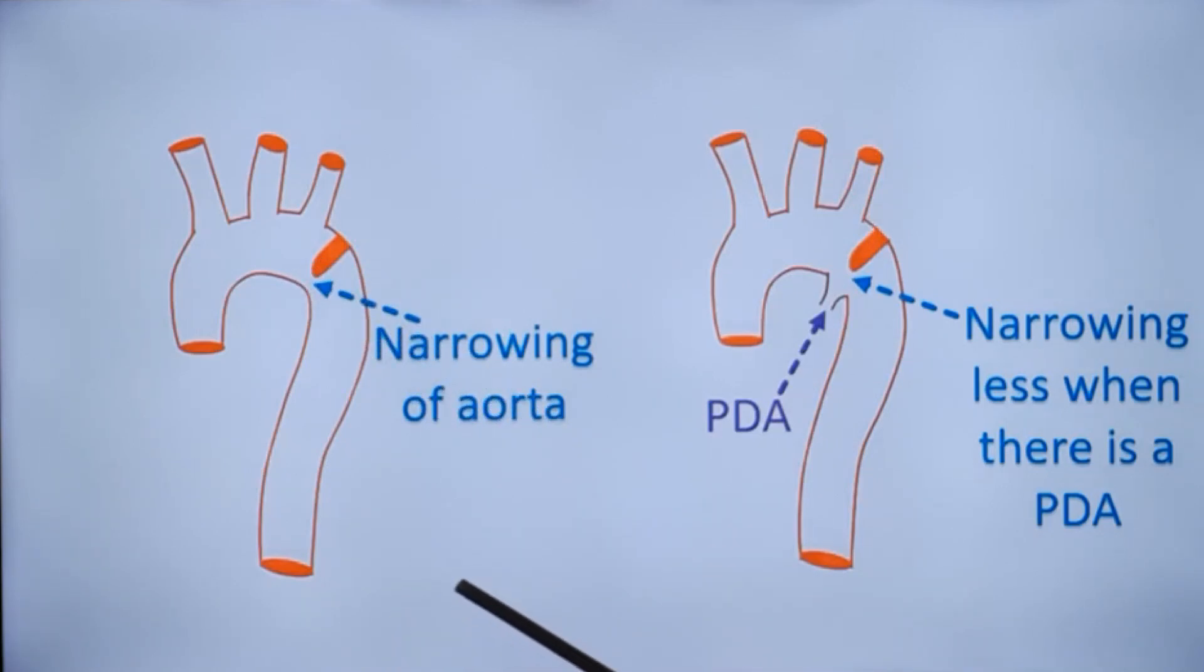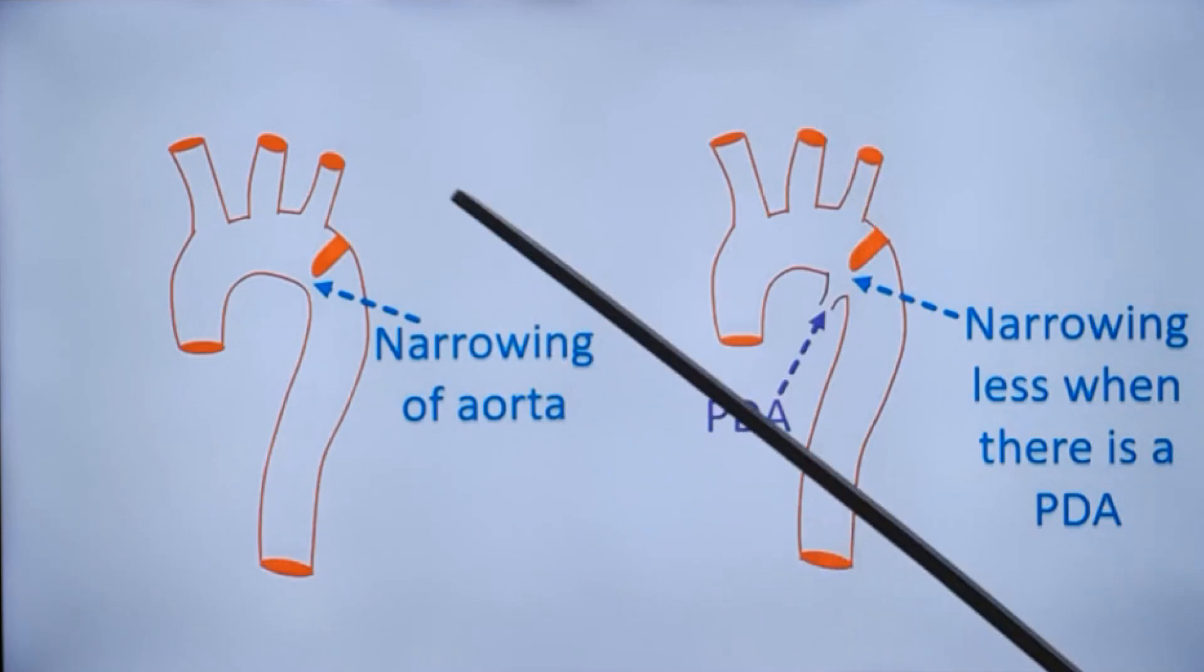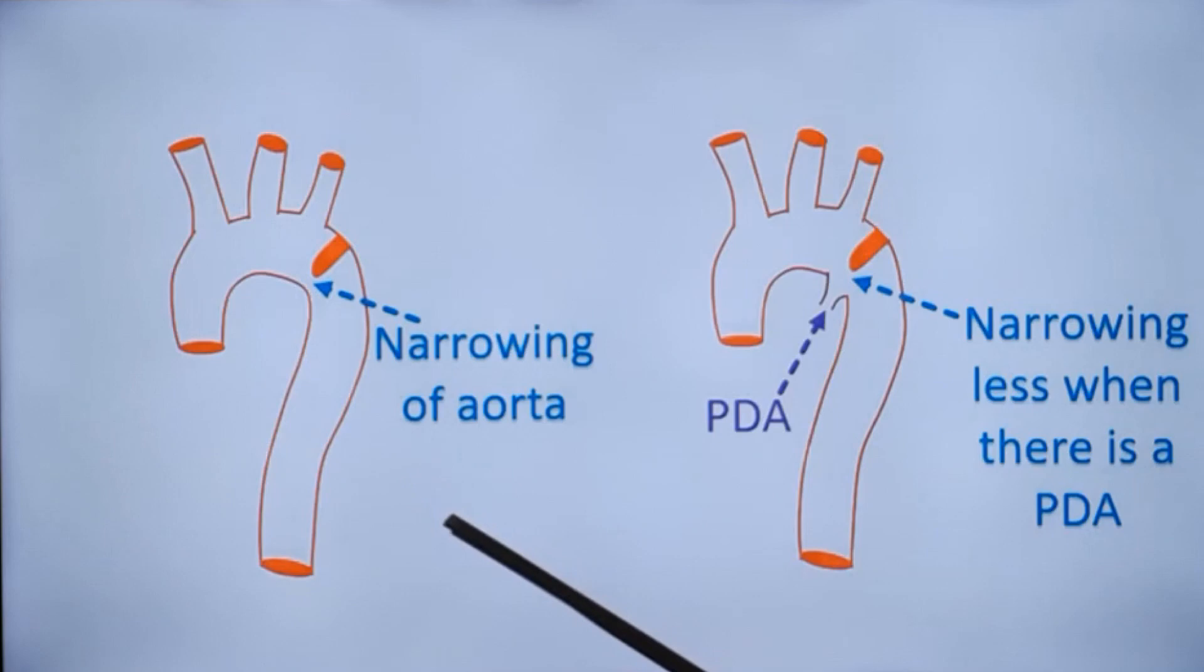So this narrowing produces a high gradient which can be picked up by Doppler echocardiography. The narrowing itself can also be seen by two-dimensional echocardiography. But what happens when there is a patent ductus arteriosus?